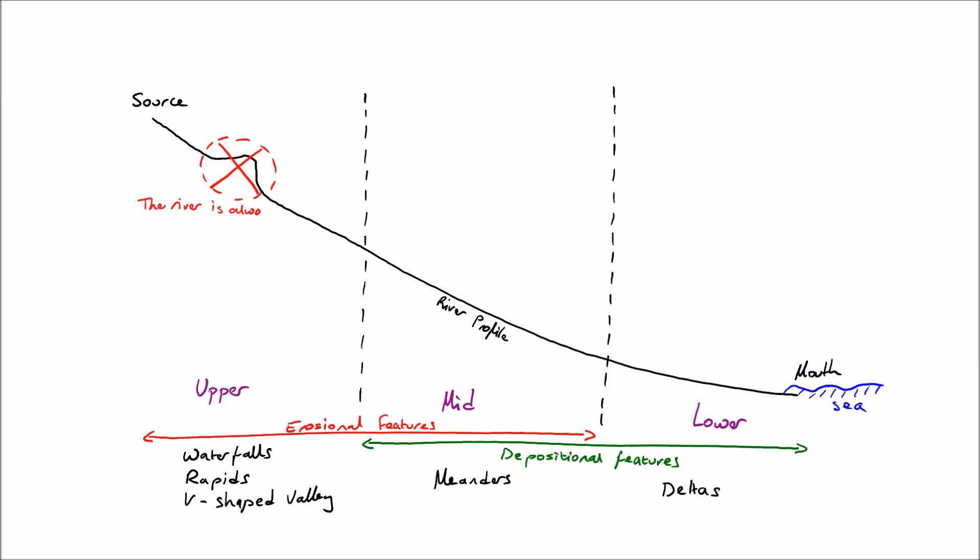Now, coming back to this anomaly that I mentioned in the upper part of the river, the reason why I put it there is to indicate that the river is trying to achieve this nice smooth profile. So any anomalies in this nice smooth profile are going to be gradually eroded away, such as waterfalls, and Niagara Falls is eroding away around about half a meter a year.